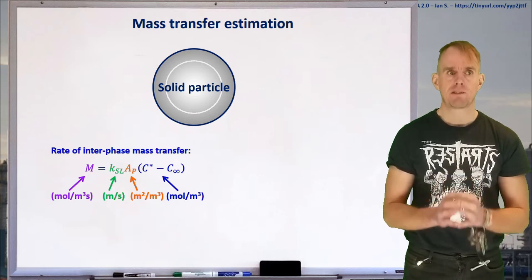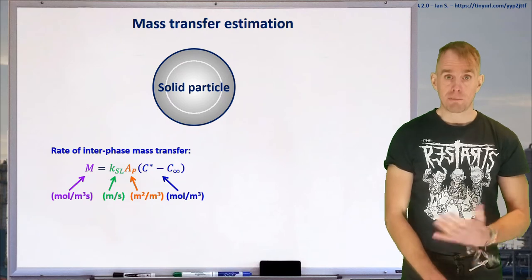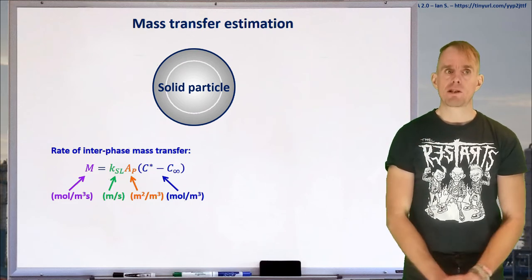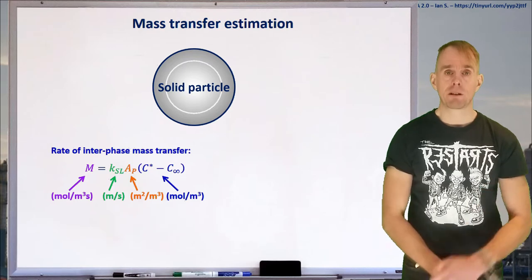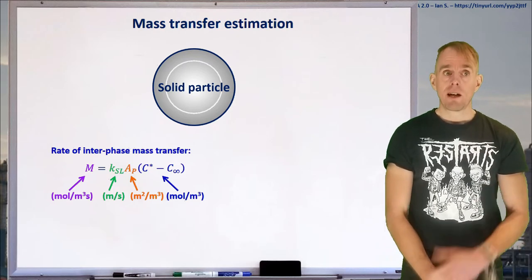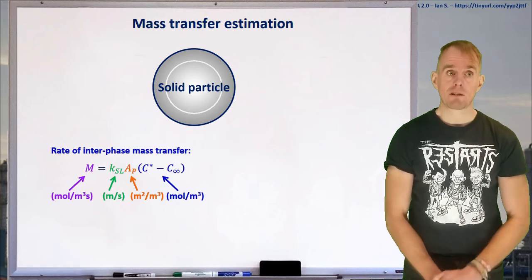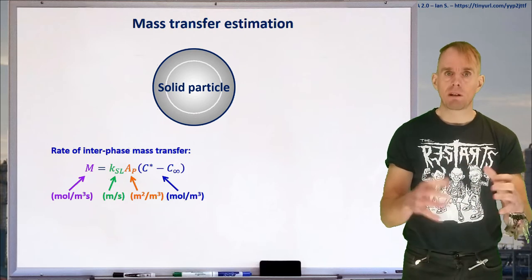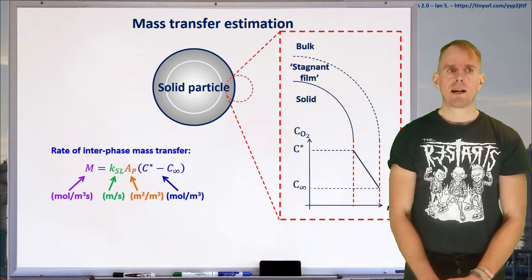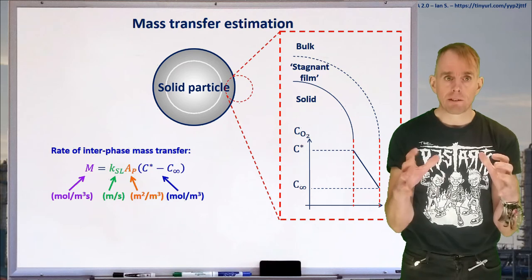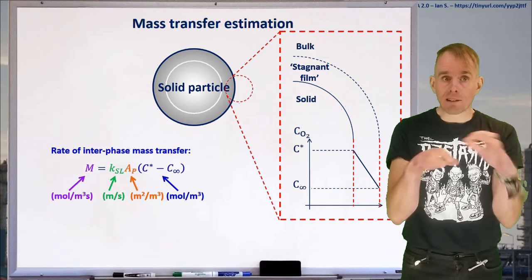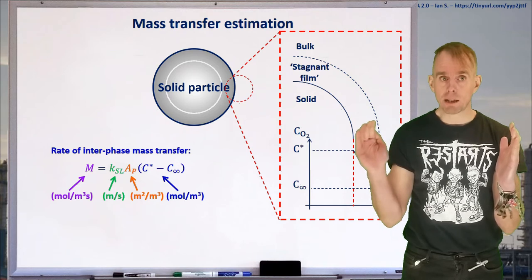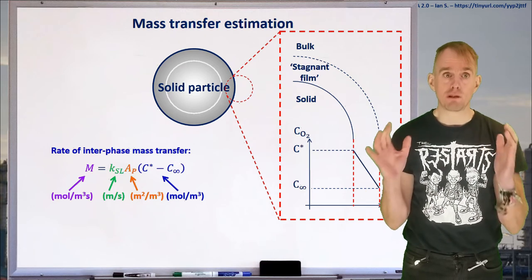So let's think about mass transfer estimation first. Here on the whiteboard, I've put what looks like quite a familiar picture compared to last lecture, except we now have a solid particle rather than the gas bubble, and a very similar equation for the rate of interphase mass transfer. We've got our total amount of mass transferred in moles per cubic metre per second, that being equal to a mass transfer coefficient KSL, metres per second, our total volumetric particle area, remember this is metres squared per metre cubed, and also our concentration driving force. So let's have a look at a small cartoon of how that concentration driving force is established. Again, we're assuming we've got sort of a stagnant film surrounding our solid, and we've got a concentration of material at that solid interface, a concentration of material in the bulk liquid, and the concentration gradient that exists is the gradient between those two values.